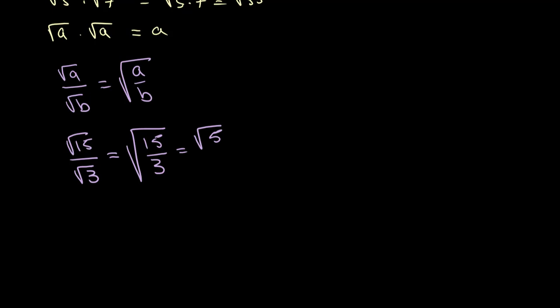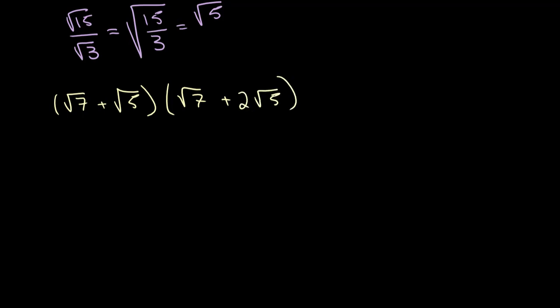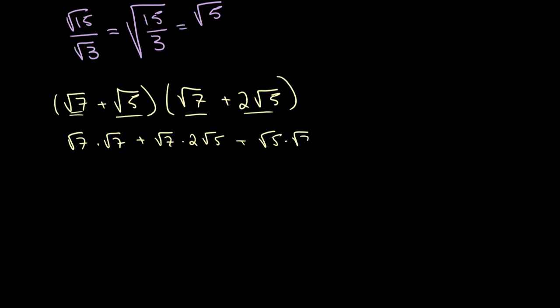We use these operations to both simplify and expand expressions involving surds. For example, let's expand (root 7 + root 5)(root 7 + 2 root 5). We multiply term by term: root 7 times root 7, then root 7 times 2 root 5, then root 5 times root 7, and finally root 5 times 2 root 5.